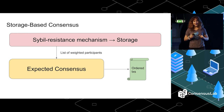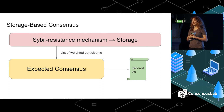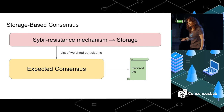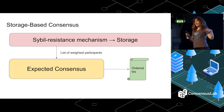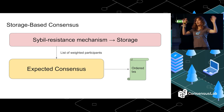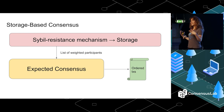This list of weighted participants is going to run expected consensus, which is one consensus protocol. The output of this consensus protocol, run by this weighted list of participants, is a list of ordered transactions. Today I'm going to be talking about the expected consensus part. Any set of weighted participants could run this. I'm going to ignore storage, but just know that in Filecoin, participants are weighted according to their storage.